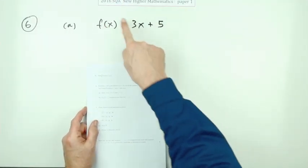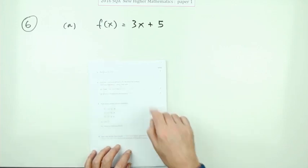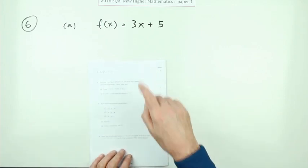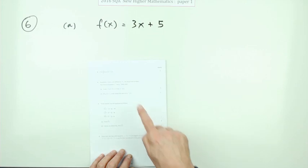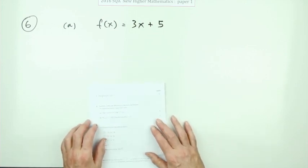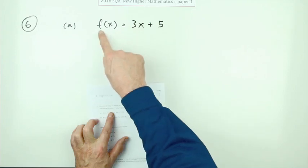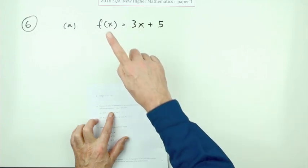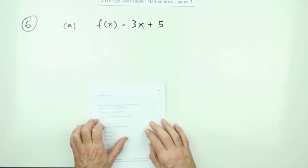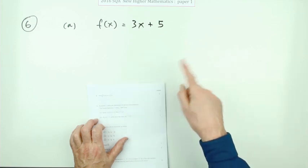Question 6 from Paper 1 of the 2016 Higher Maths — 4 marks. This is a functions of functions question on inverse functions: find the inverse function. It gives you the formula for f(x) and says find the formula for the inverse function, given that they both exist.